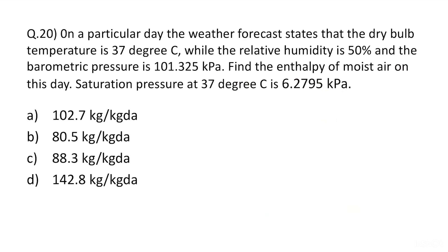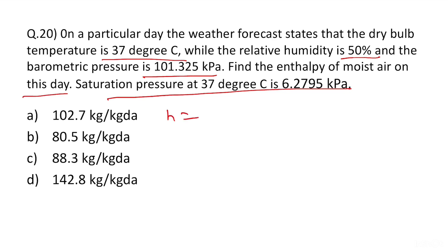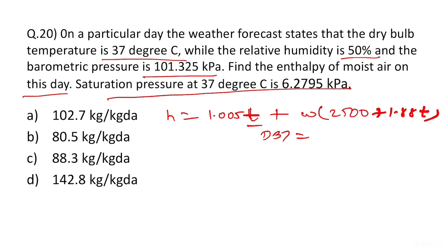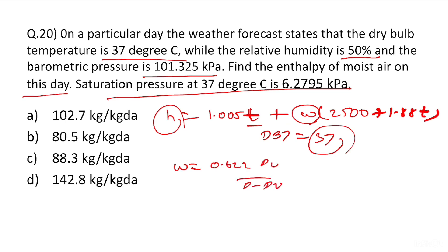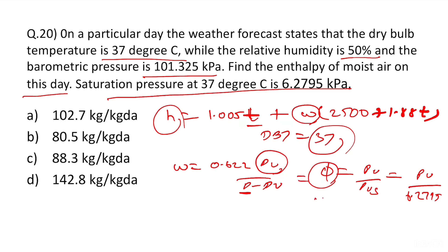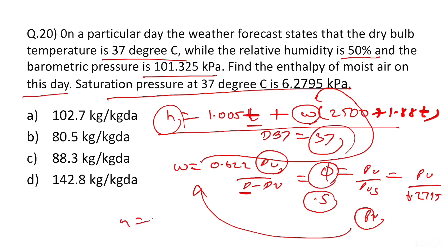Question 20: On a particular day, dry bulb temperature is 37°C, relative humidity is 50%, barometric pressure is 101.325 kPa. Find the enthalpy of moist air. First write the enthalpy formula where T is DBT = 37°C. To find specific humidity: W = 0.622 × PV / (P − PV). Relative humidity = PV / PVS, where PVS = 6.2795 kPa. With RH = 50%, PV = 0.5 × 6.2795. Substituting into the W formula and then into the enthalpy formula gives h = 88.3 kJ/kg.